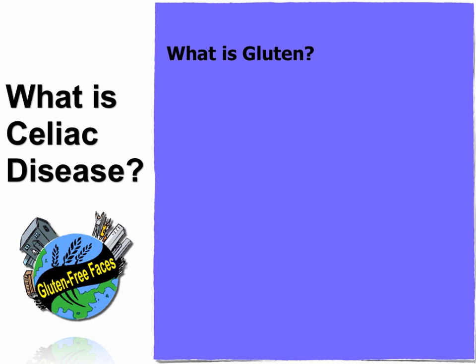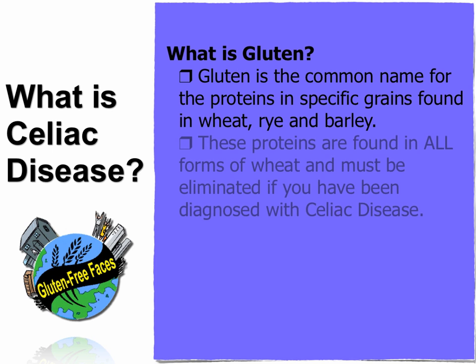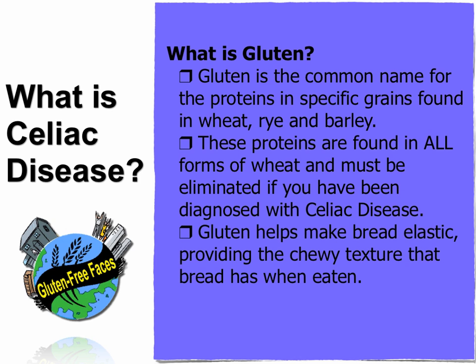What is gluten? Gluten is the common name of the proteins in specific grains found in wheat, rye, and barley. These proteins are found in all forms of wheat and must be eliminated if you've been diagnosed with celiac disease. Gluten helps make bread elastic, providing the chewy texture that bread has when eaten.